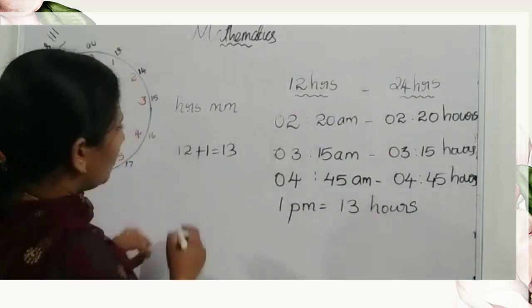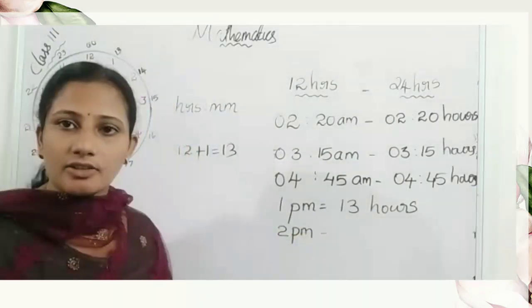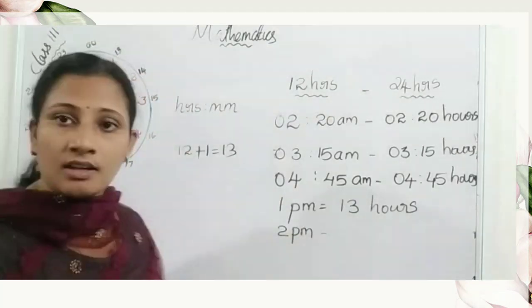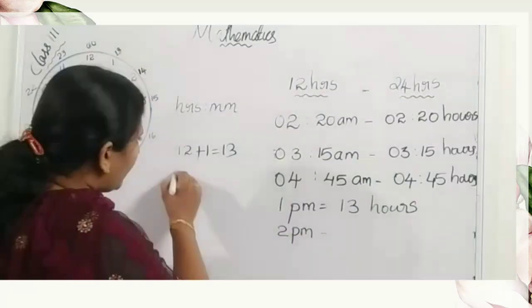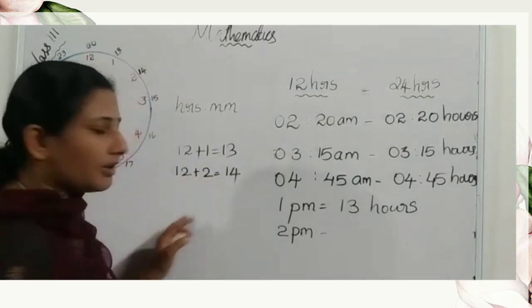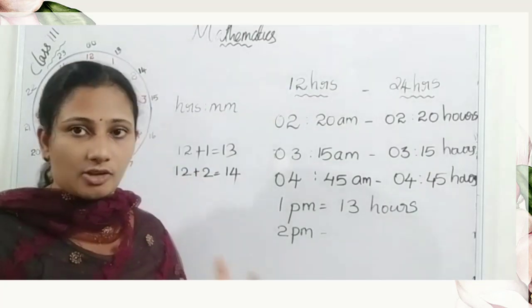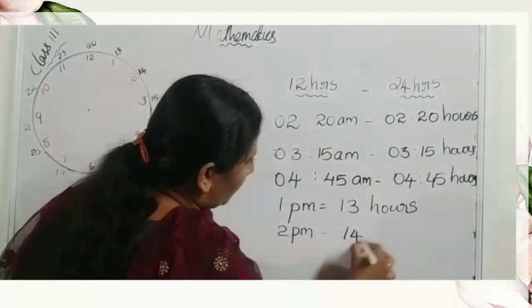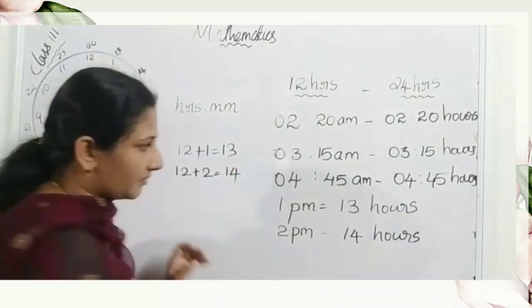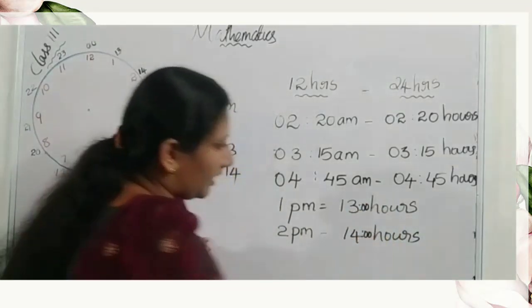Next, two p.m. — how do we write it in the twenty-four hour clock system? Two p.m. means fourteen hours. We find it like this: twelve plus two equals fourteen. So two p.m. is fourteen hours.